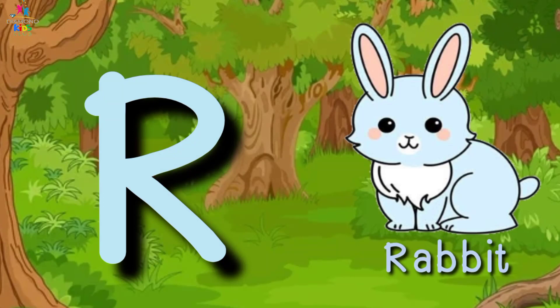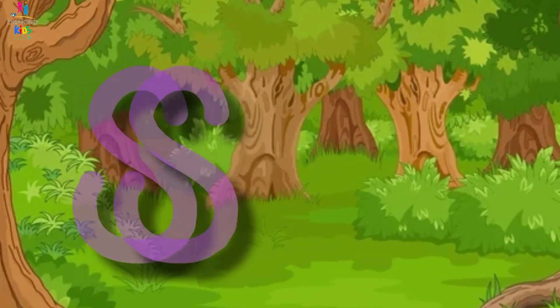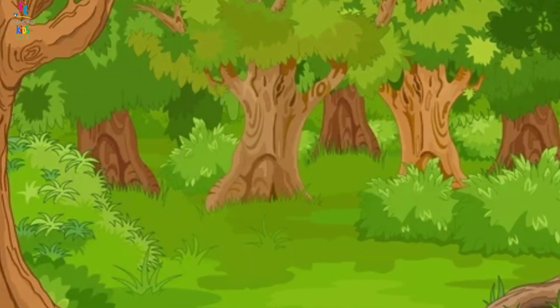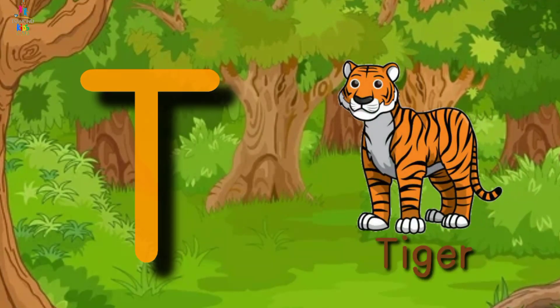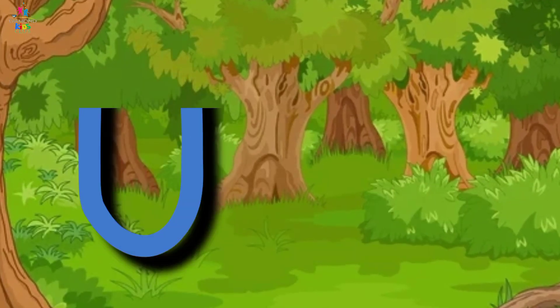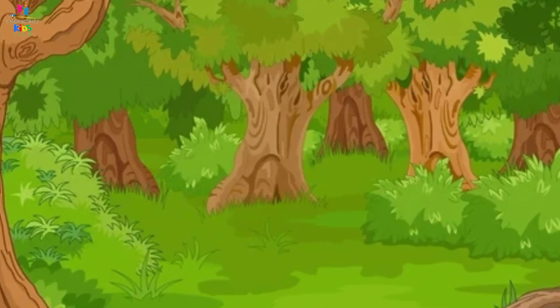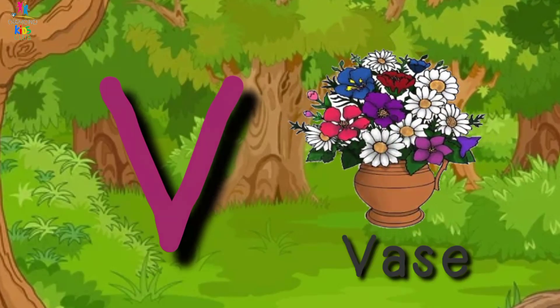R for rabbit, N for ship, T for tiger, U for umbrella, B for bus.